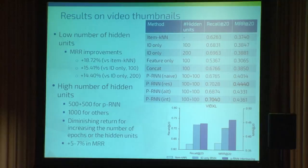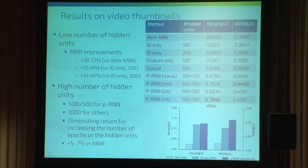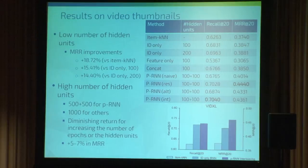In recall, you can't see much improvement because the original recall values were already very high. What happens is the top-20 list contains basically the same number of relevant items, but they are pushed more to the top, which is very important in recommender systems. We also ran experiments with a high number of features — 5,000 plus 500 for PRNN and 1,000 for the others. Increasing hidden units further has diminishing returns, and increasing epochs also has diminishing returns. Even in this setup, we could get a 5–7% increase in MRR using image features alongside the ID over the ID-only network.